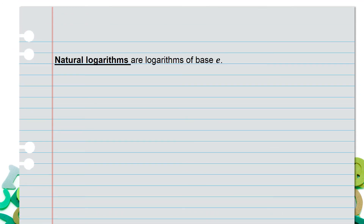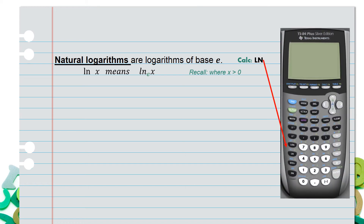Next, we're going to talk about natural logarithms. Natural logarithms are logs of base e. Whenever you see ln, that means natural logarithm, and it automatically runs off of base e. Now, e is that 2.718 value. Because this is still a logarithm, x has to be greater than zero. On the calculator, this can be represented by the ln button, which has been highlighted on the given calculator.